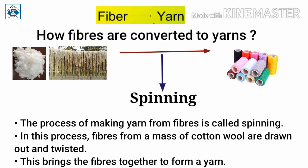How are fibers converted to yarn? Under the process, you can see that there are plant fibers — the first one is cotton, and another is jute. This is done through spinning. Spinning is one kind of process by which fibers are converted to yarn. The process of making yarn from fiber is called spinning.